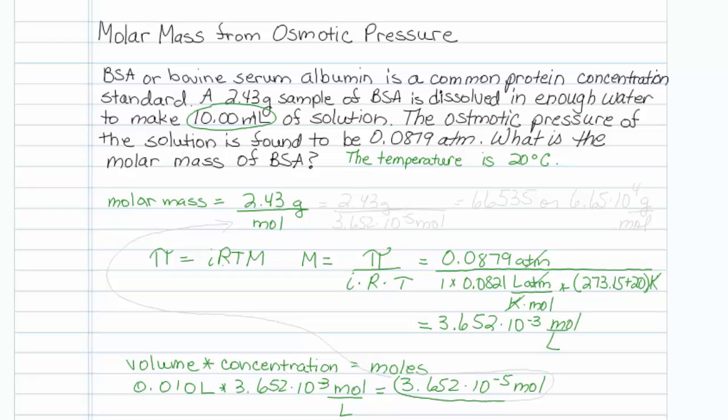Okay, this is the value that we needed right up here. So I will take 2.43 grams and divide it by 3.652 times 10 to the minus 5 moles. Punch that into my calculator, and it turns out that 6.653 comes out. Or if we write it in appropriate sig figs, 6.65 times 10 to the fourth grams per mole. And that's how you do it.